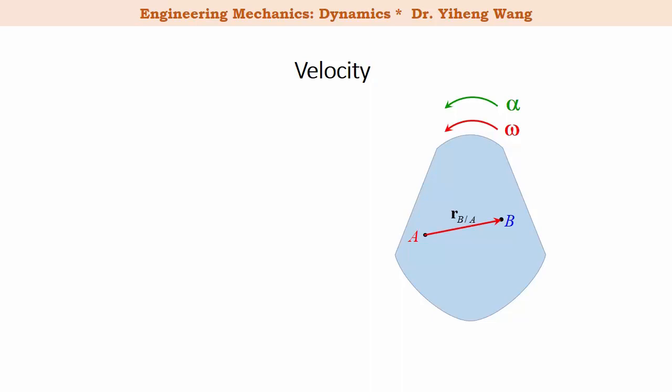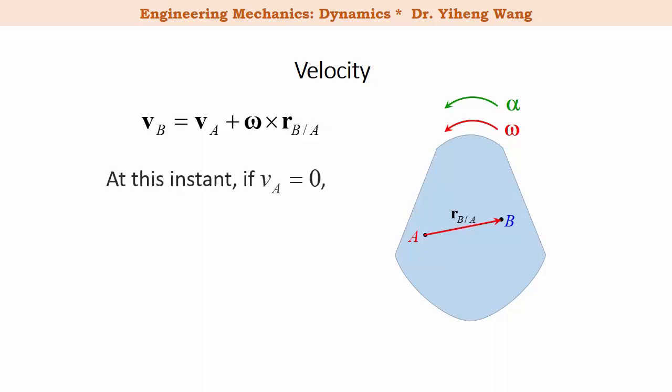Once again, for a rigid body undergoing general plane motion, for any two points A and B that belong to this rigid body, we can write this equation that relates their linear velocities. According to this equation, if at this instant V_A is zero, then this equation becomes simply V_B equals the cross product of omega, which is the angular velocity vector of this rigid body, and R_{B/A}, which is the relative position vector with respect to point A. Also according to cross product rules, we can determine that the direction of the velocity of point B is perpendicular to its relative position vector.